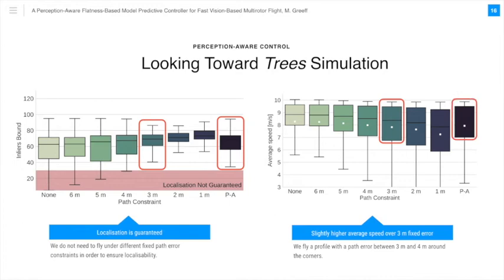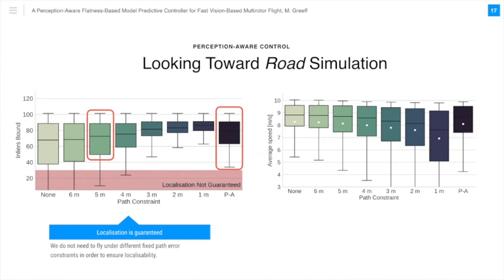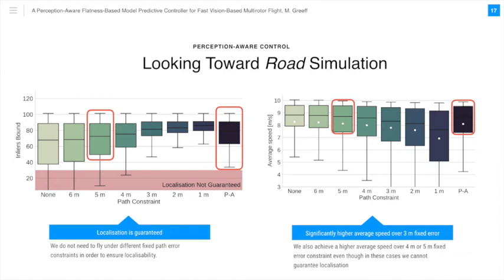As in case 1, we show similar box plots for the second case. For case 2, when we are looking toward the road, we actually achieve a high average speed over both 4 or 5 meter fixed path error constraints, even though in these cases we cannot guarantee localization. This brings us to a key takeaway.